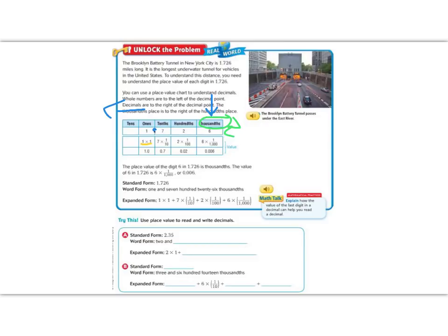This is what we call the value. The place value of the digit six in 1.726 is in the thousandths place. The value of it is six times one one thousandths, or we can call that 0.006 or six thousandths.